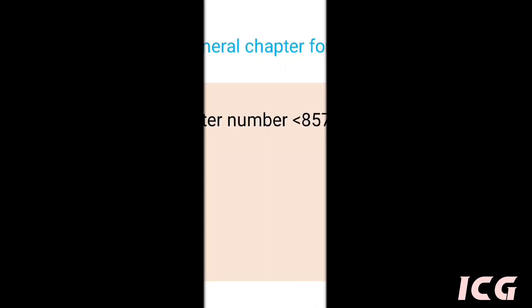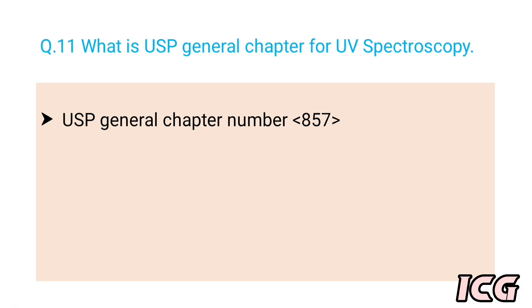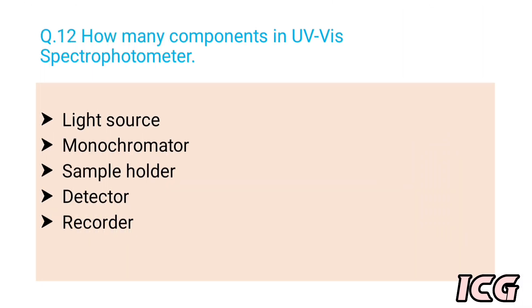The next question is: what is the USP general chapter for UV spectrophotometer? The answer is USP general chapter number 857. The next question is: how many components are in UV-Visible spectrophotometer? The answer is there are five main components: light source, monochromator, sample holder, detector, and recorder.